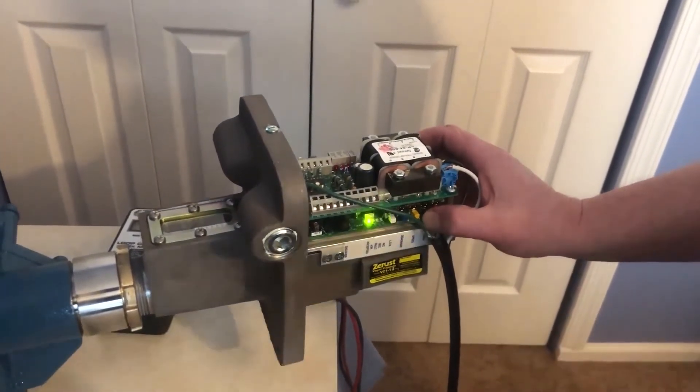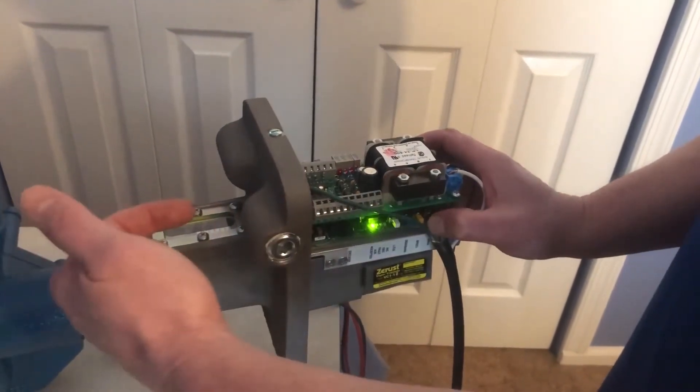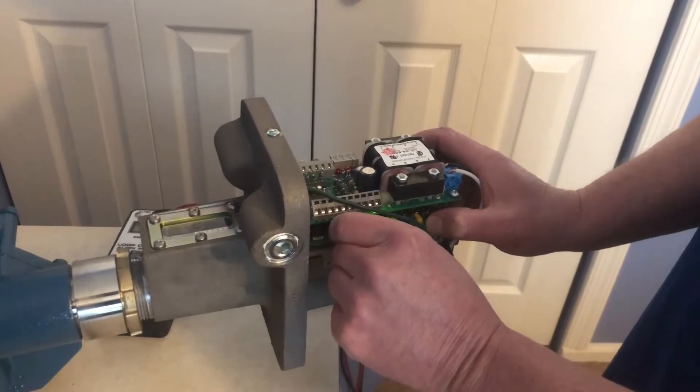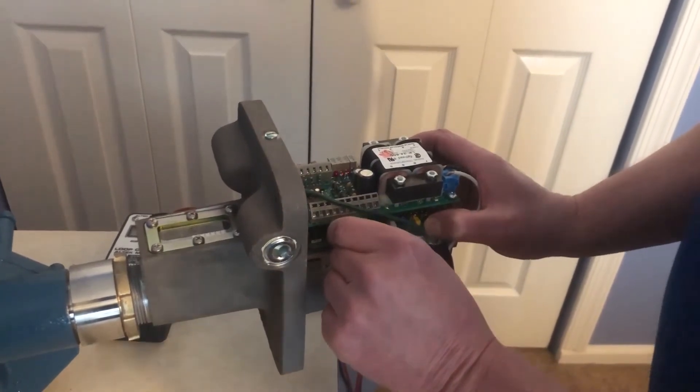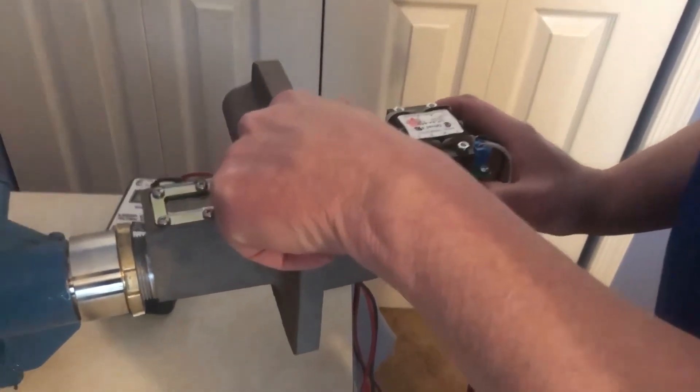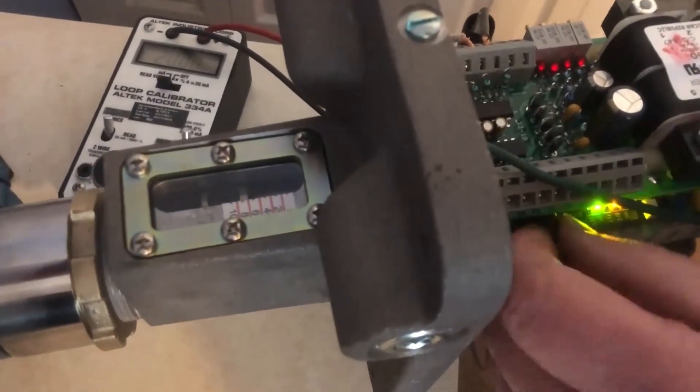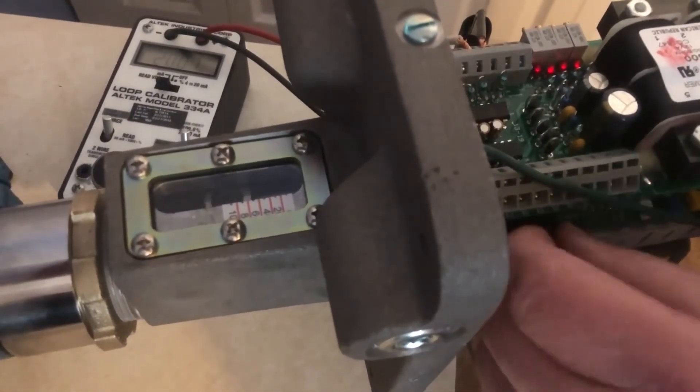And it goes the opposite way. So if you want to bring the stroke down, you want to turn the encoder knob counterclockwise. And you want to come over here, you'll see as I adjust. So now I'm moving that stroke.